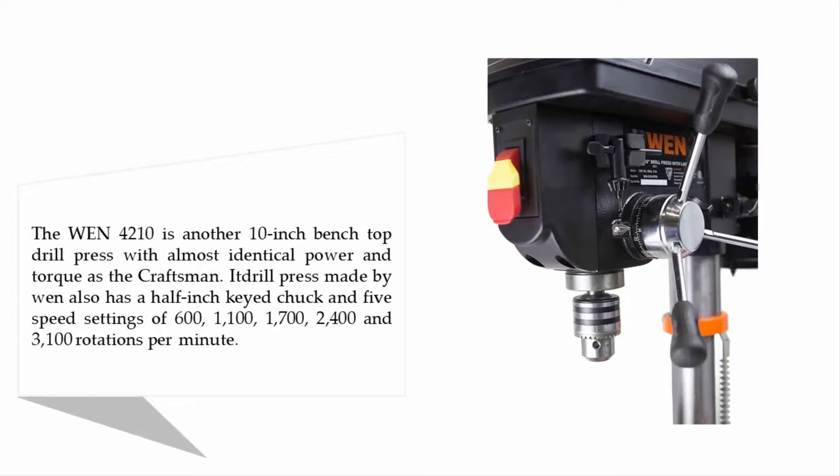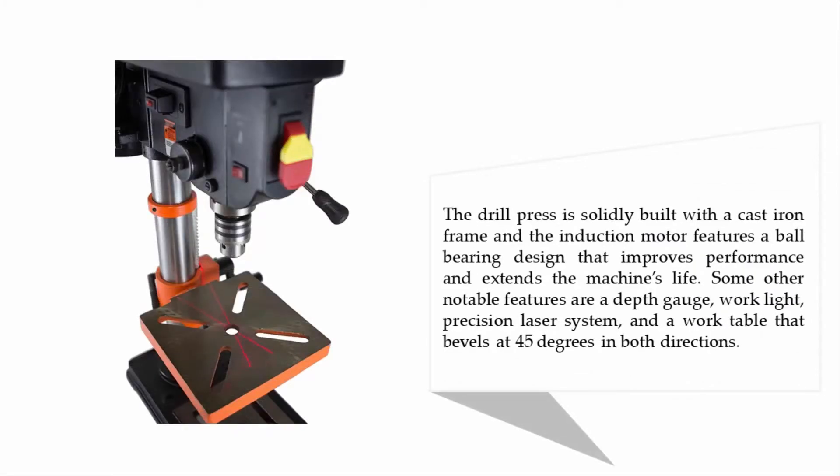The drill press is solidly built with a cast iron frame and the induction motor features a ball bearing design that improves performance and extends the machine's life. Some other notable features are a depth gauge, work light, precision laser system, and a work table that bevels at 45 degrees in both directions.